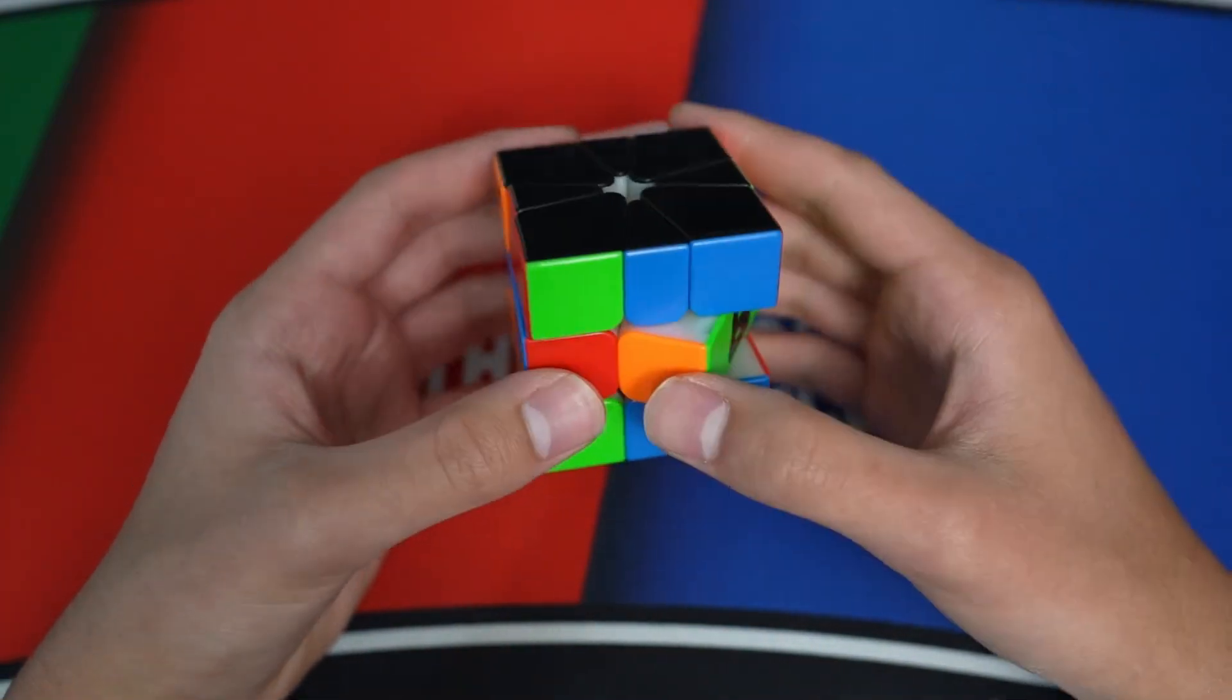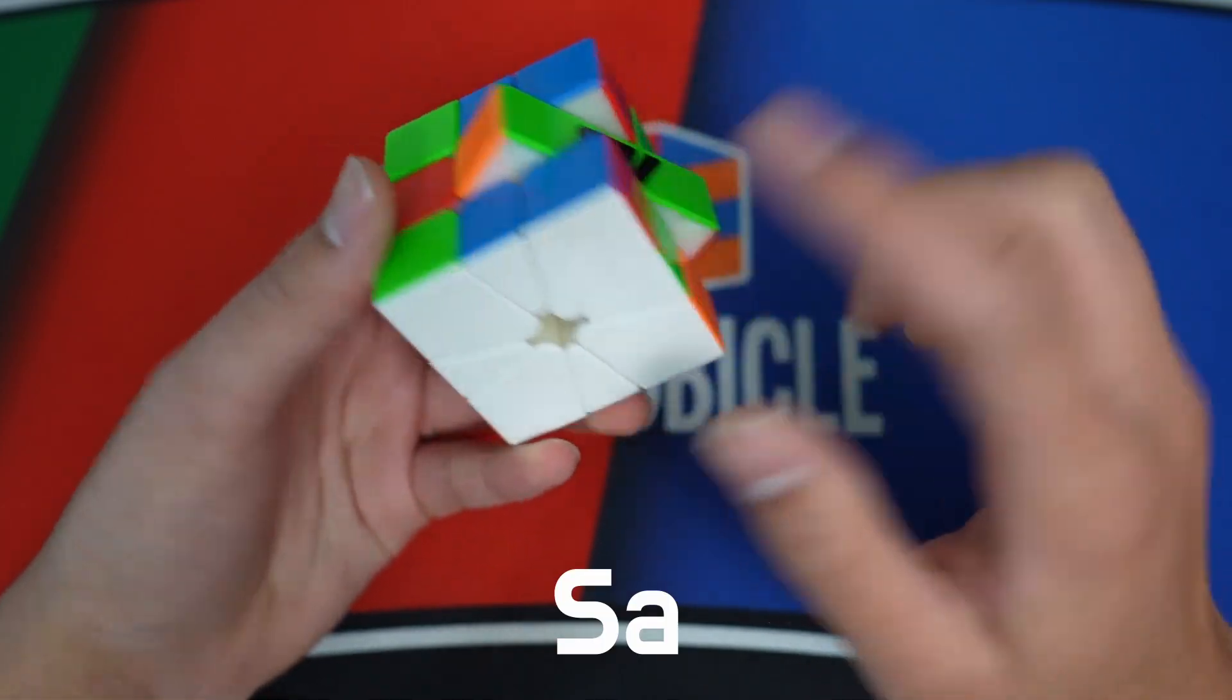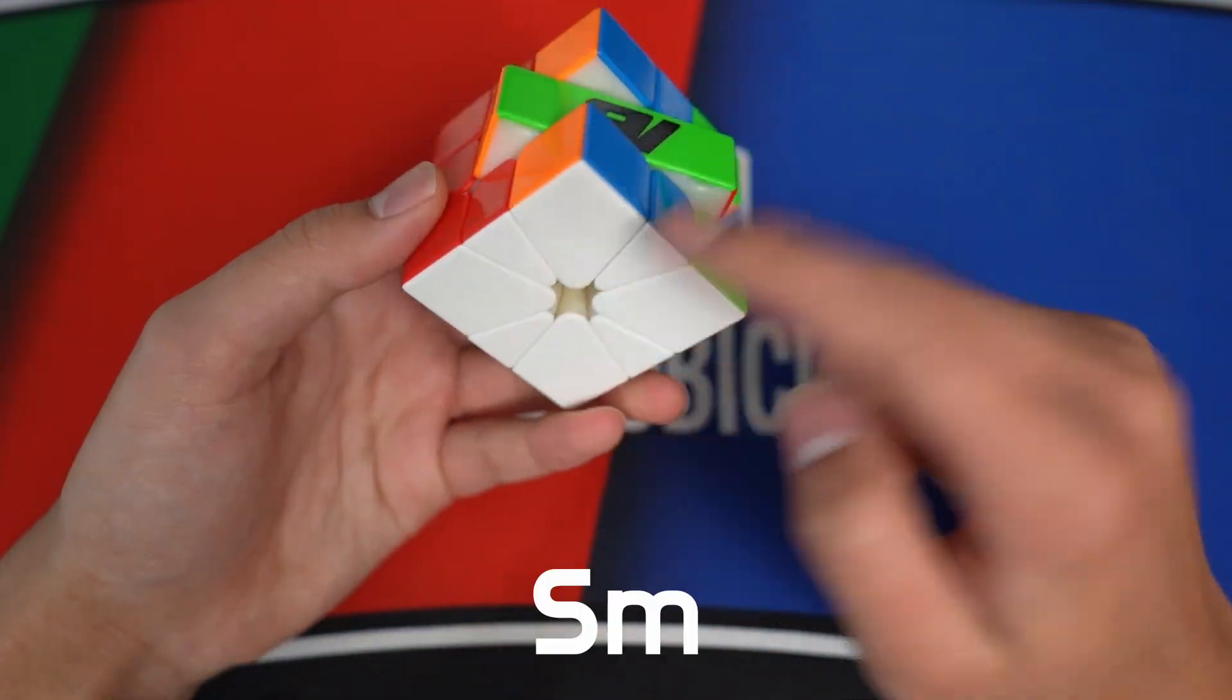S perms are based off of alignment. So these are aligned. So this is SA, and then this is SM.